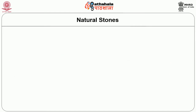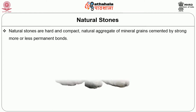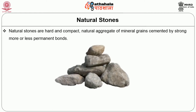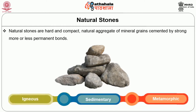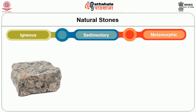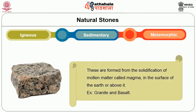Natural stones are hard and compact — natural aggregates of mineral grains cemented by strong, more or less permanent bonds. Natural rocks are classified as igneous, sedimentary and metamorphic depending upon their mode of formation. Igneous rocks are formed from the solidification of molten matter called magma in the surface of the earth or above it.